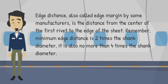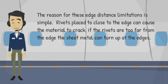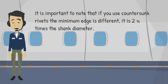Edge distance, also called edge margin by some manufacturers, is the distance from the center of the first rivet to the edge of the sheet. The minimum edge distance is 2 times the shank diameter, and no more than 4 times the shank diameter. Rivets placed too close to the edge can cause the material to crack; if the rivets are too far from the edge, the sheet metal can turn up at the edges. If you use countersunk rivets, the minimum edge distance is different — it is 2 and 1/2 times the shank diameter.